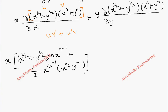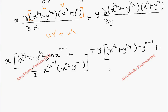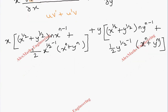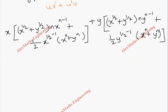Similarly for the second term, outside there is y. We write u as (x^(1/2) + y^(1/2)), differentiation of the next term with respect to y gives n·y^(n-1), plus differentiation of u which is (1/2)·y^(-1/2), and the other term is written as it is. Now we multiply the outside x term with both terms.